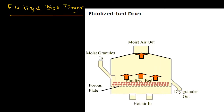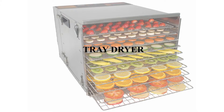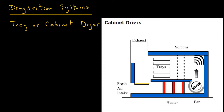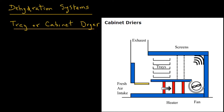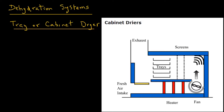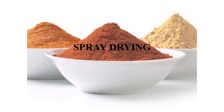Fluidized bed dryers are often used for granular foods. The tray or cabinet dryer has an insulated cabinet with trays on which the food is placed. As the fan operates, it forces fresh air from the outside. The air goes over the heater coils where it is heated, and then through the trays, where moisture is transferred from the food into the air. The moist air coming from the trays is either exhausted or reused.